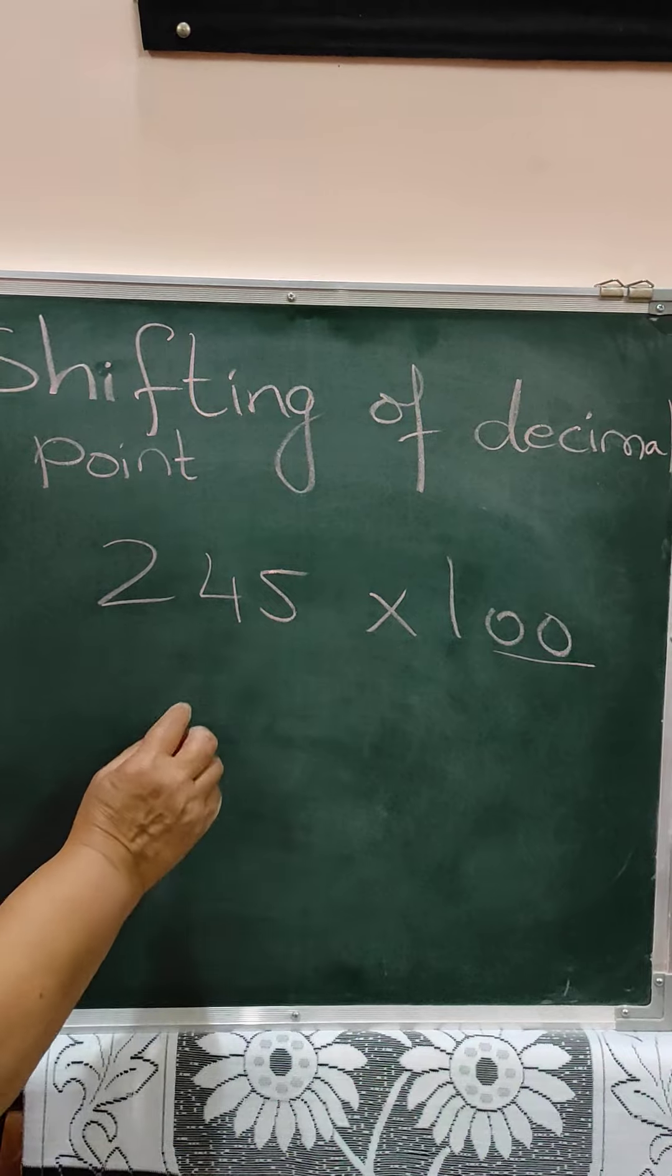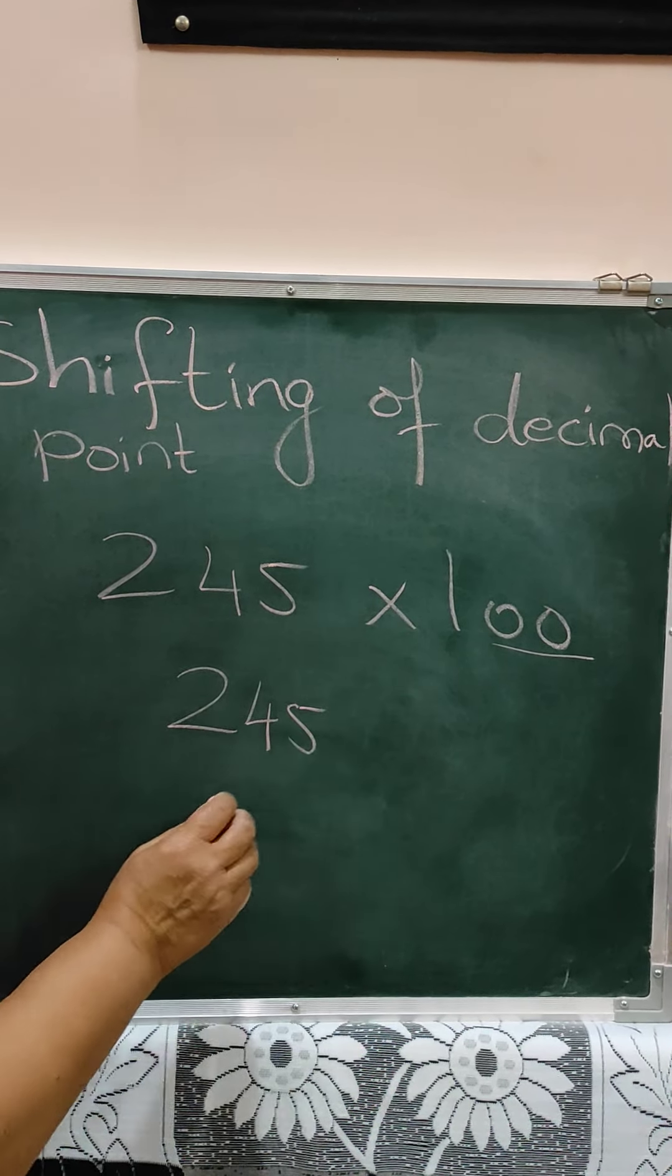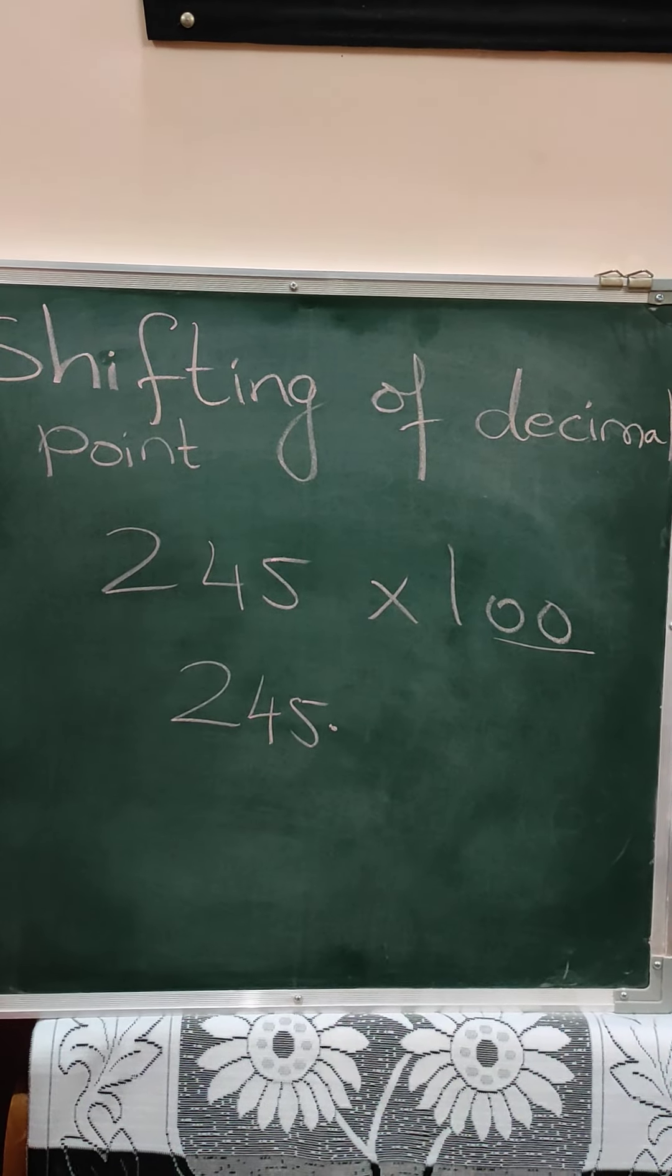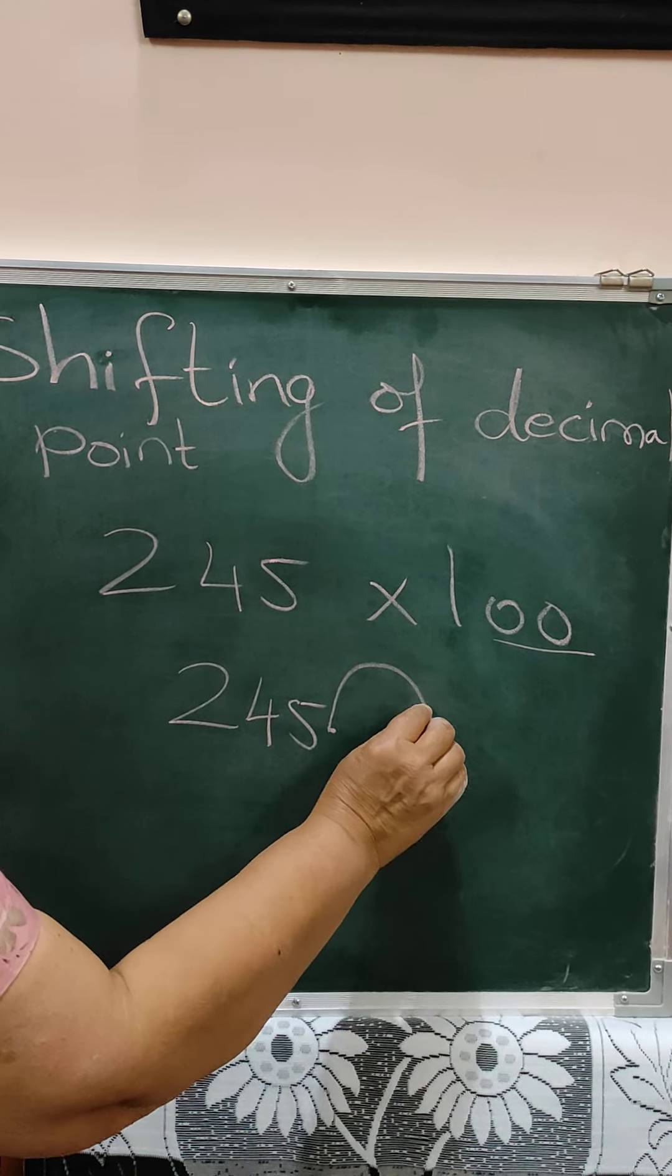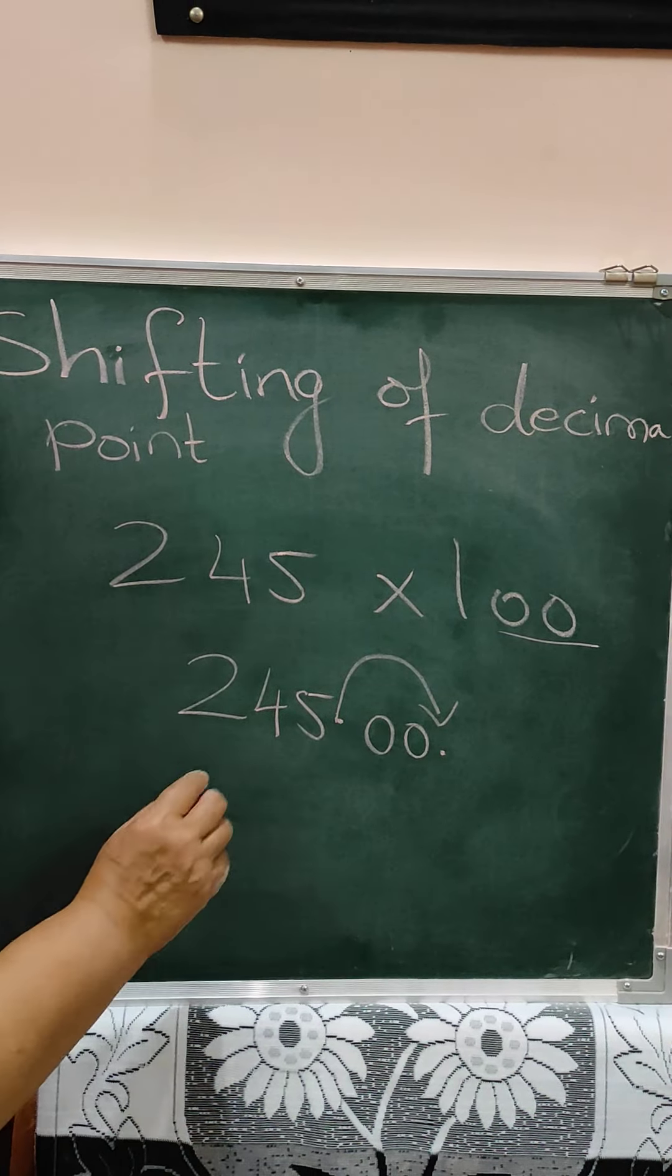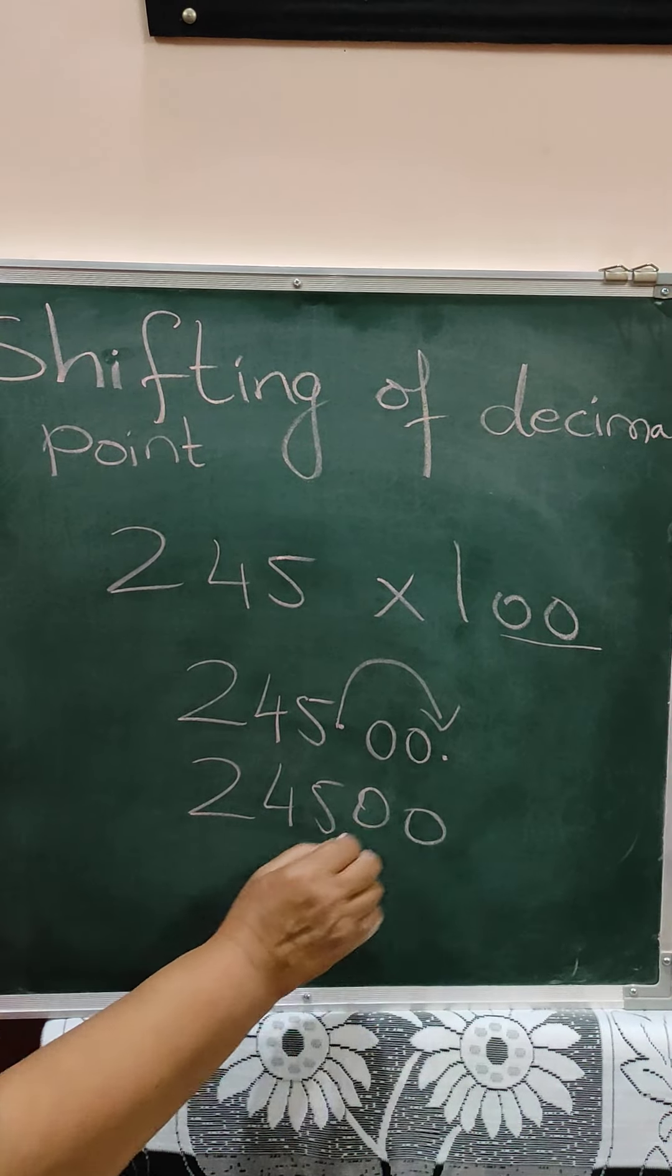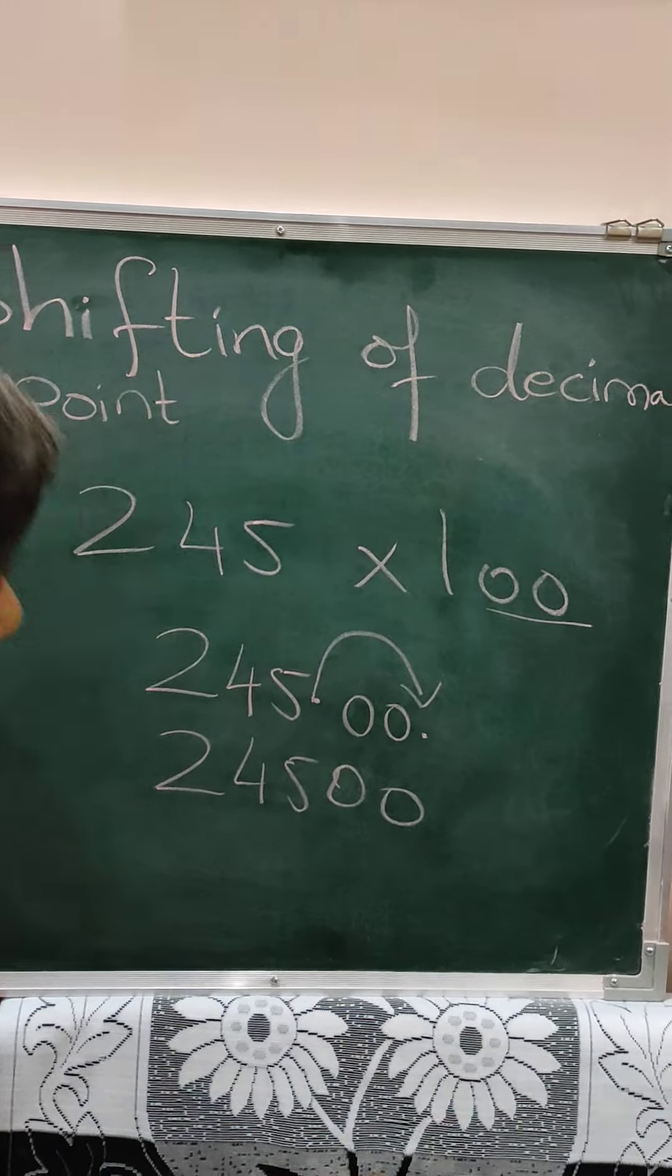Now here, with one, so 245 ones are 245. And these two zeros, we need not to multiply. In multiplication, what we have to do is, you know the decimal point, if it is not there, consider it to be at the end. And shift two decimal places. Now there are no digits, so you can put here two zeros and shift the decimal point here. So the answer will be 24500.